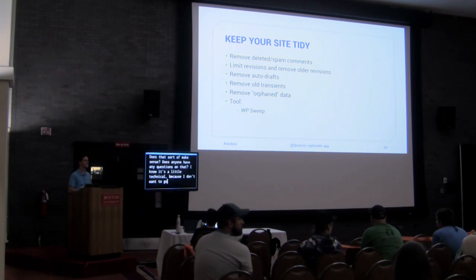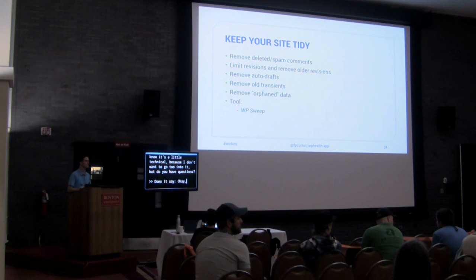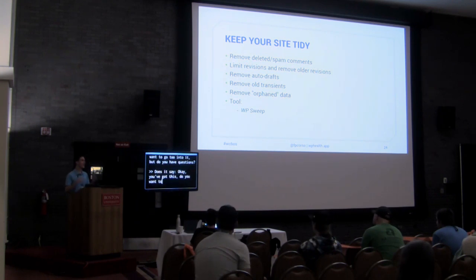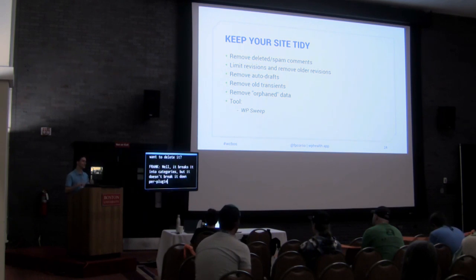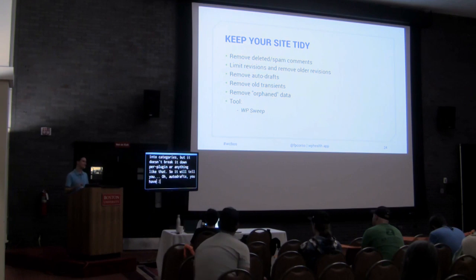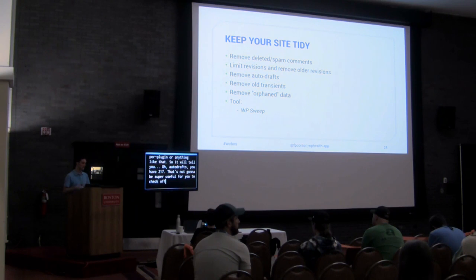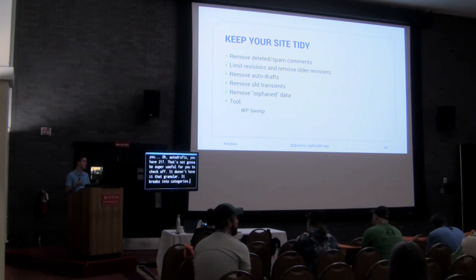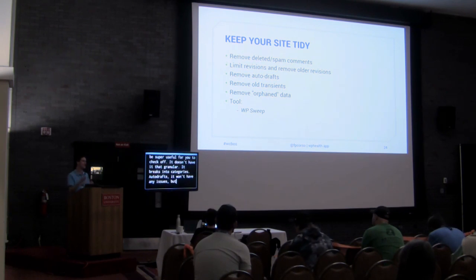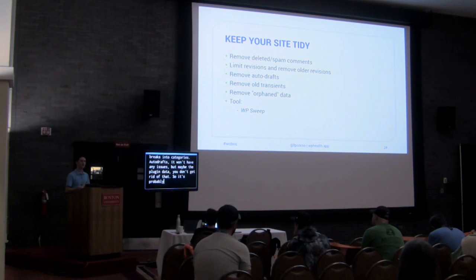WP Suite breaks things into categories — for example, it will tell you you have 217 auto-drafts. It doesn't break it down per plugin, so it's not that granular. It breaks into categories like auto-drafts and plugin data, and you can decide which categories to clear. It's just not as granular as you might be hoping for.